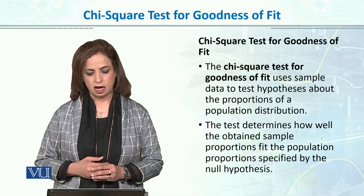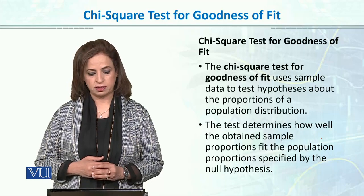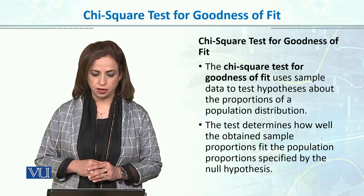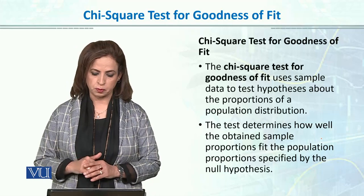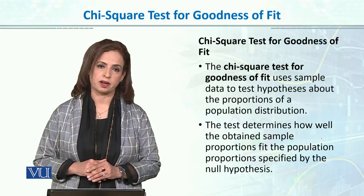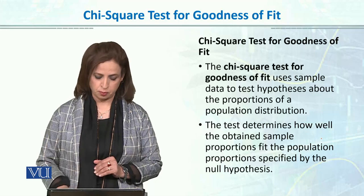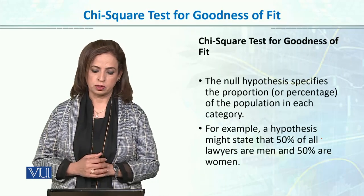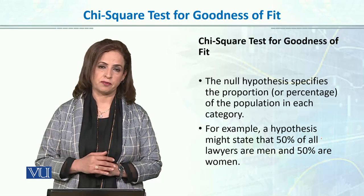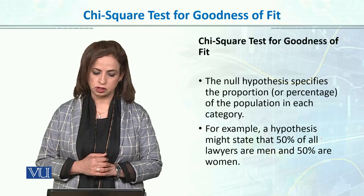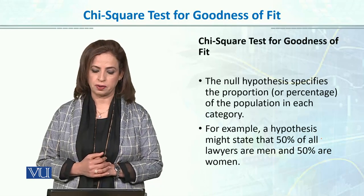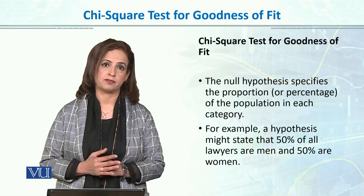The test determines how well the obtained sample proportion fits the population proportion specified by the null hypothesis. In this case, the null hypothesis specifies the proportion or percentages of the population in each category.